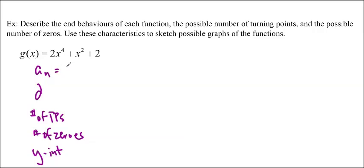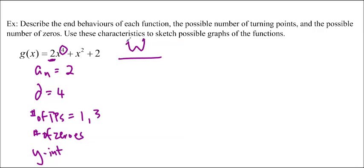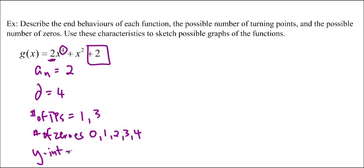The leading coefficient is 2 and the degree is 4. The number of TPs will have to be 1 or 3, because n minus 1 is 3. For the number of zeros: if you have an even degree, the curve could be hovering above the x-axis — a saggy bum waiting to sit — so the number of zeros can be 0, 1, 2, 3, or 4, up to 4 because the degree is 4. The y-intercept is the last constant term, which is 2.